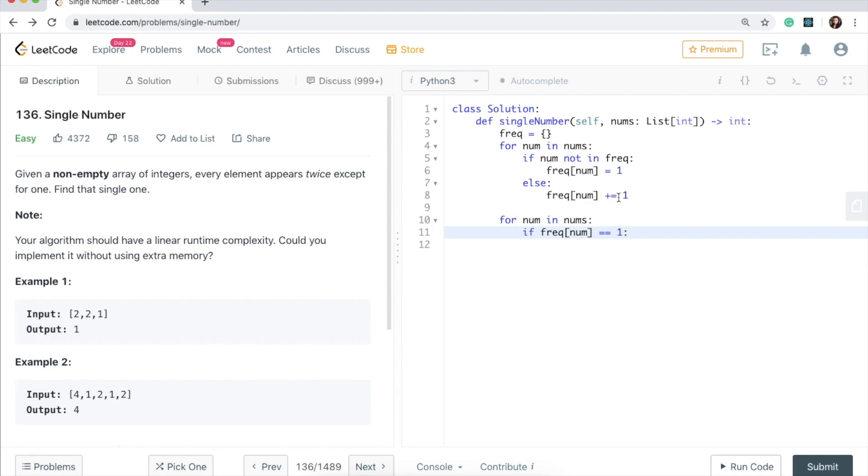So this is where we catch which number is a single number, right? Because it never got incremented in this else because our map never encountered it again. So if that is equal to one, then what we can do is return that number because that will be our single number. Let's give this a run.